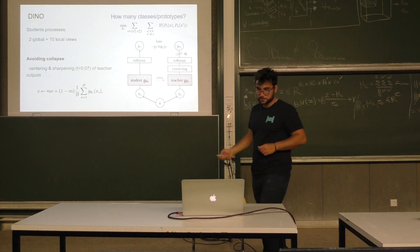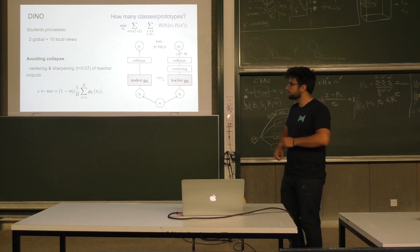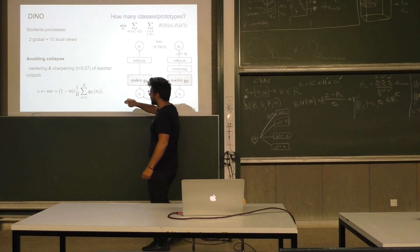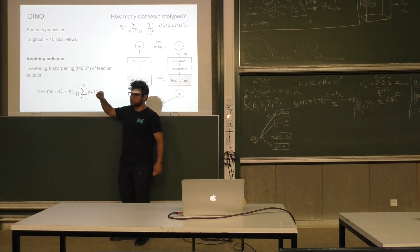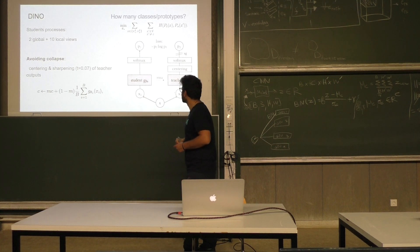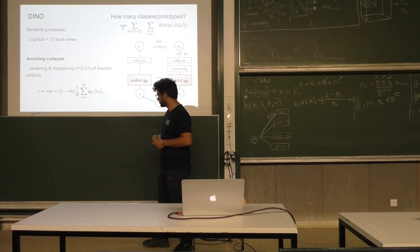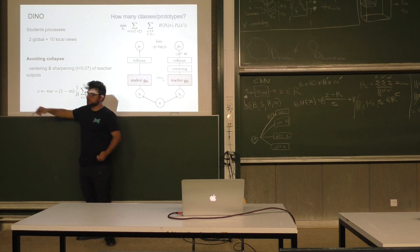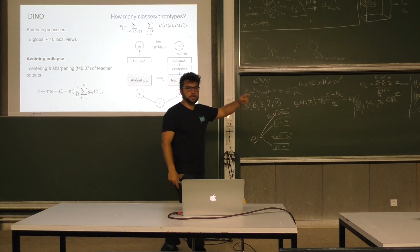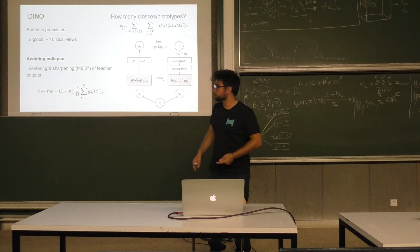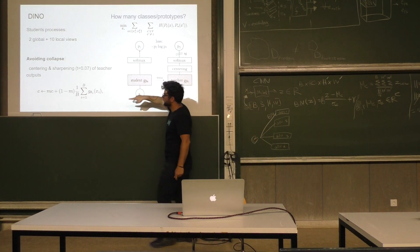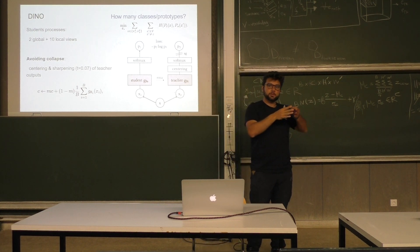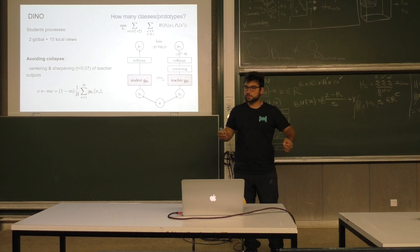Let's take a look at centering first. Centering by itself is again an exponential moving average — this is the solution to most problems. But here it's not over the parameters of a network, but over the output features of the teacher. T is the subscript corresponding to the teacher model. Before we had alpha, now we call it N, and C is the center — this is the average over multiple iterations of the features of the teacher.